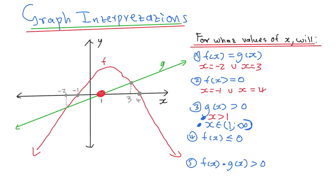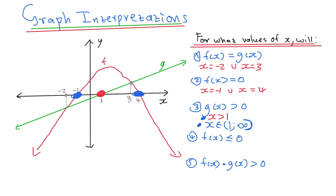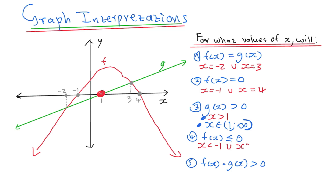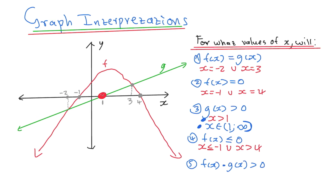So f of x is under the x-axis before negative 1 and after 4. We look at where it cuts the x-axis: on one side it goes down before negative 1, and on the other side it goes down after 4. So f of x is less than or equal to 0 before negative 1 and after positive 4. You can say: x is less than negative 1, union, x is greater than positive 4. But remember, there's also an equal sign, so you include negative 1 and 4 as well.